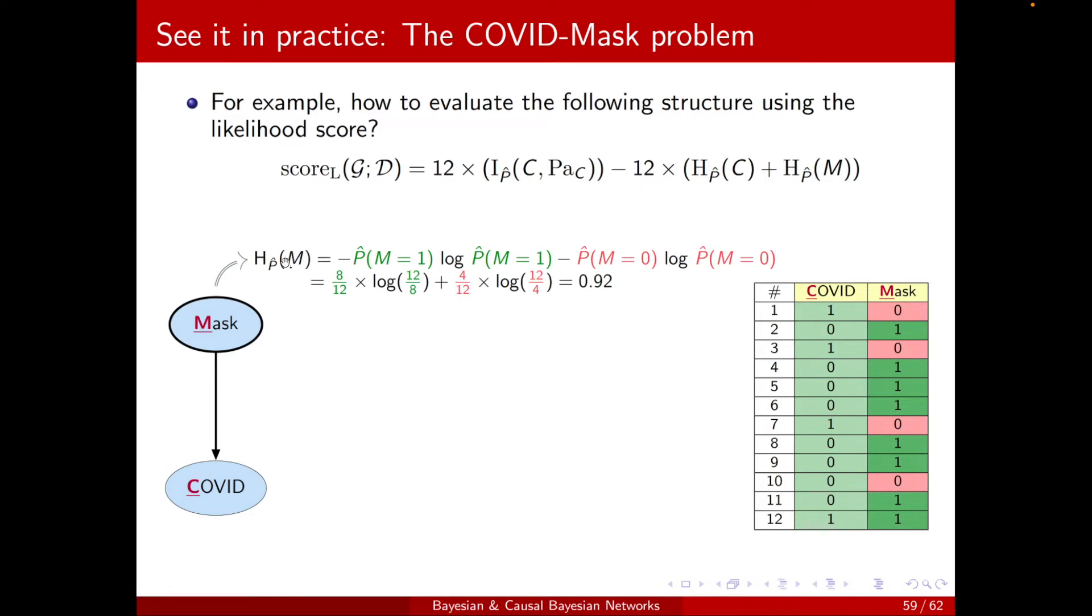So first, let's see how to calculate the entropy of M using the formula. I'm just writing it here, two cases for M, M equal to 1, M equal to 0. Just note that here, the negative sign, I turn it into a reverse of the log function. So it should have been minus 8 over 12, log of 8 over 12 with a negative sign, but then I reversed it, 12 over 8. That's a property of the log,